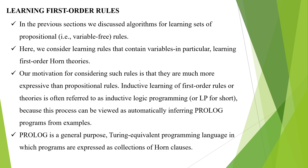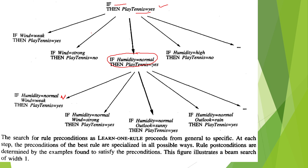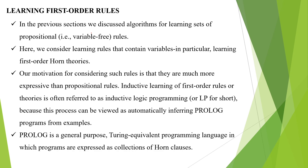Now, learning first-order rules. In the previous discussion — learn-one-rule — we learned sets of propositional rules, which are variable-free. Variables like wind equals weak, humidity — all are like constants. But in first-order rules, we use variables. That is the basic difference between normal rules and first-order rules. In the previous section we discussed algorithms for learning sets of propositional (variable-free) rules. Now we consider learning rules that contain variables — these are first-order rules or first-order horn clauses.